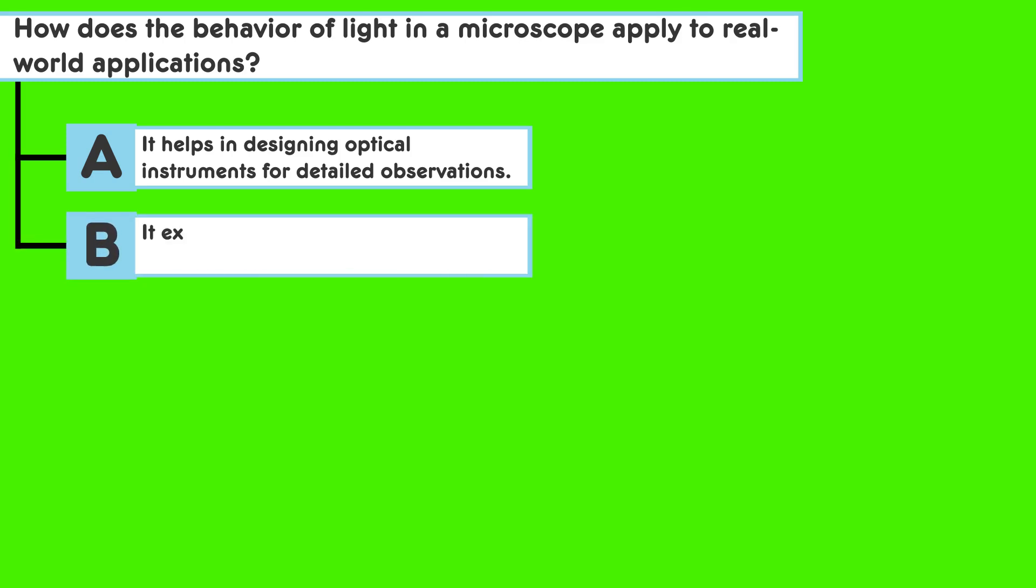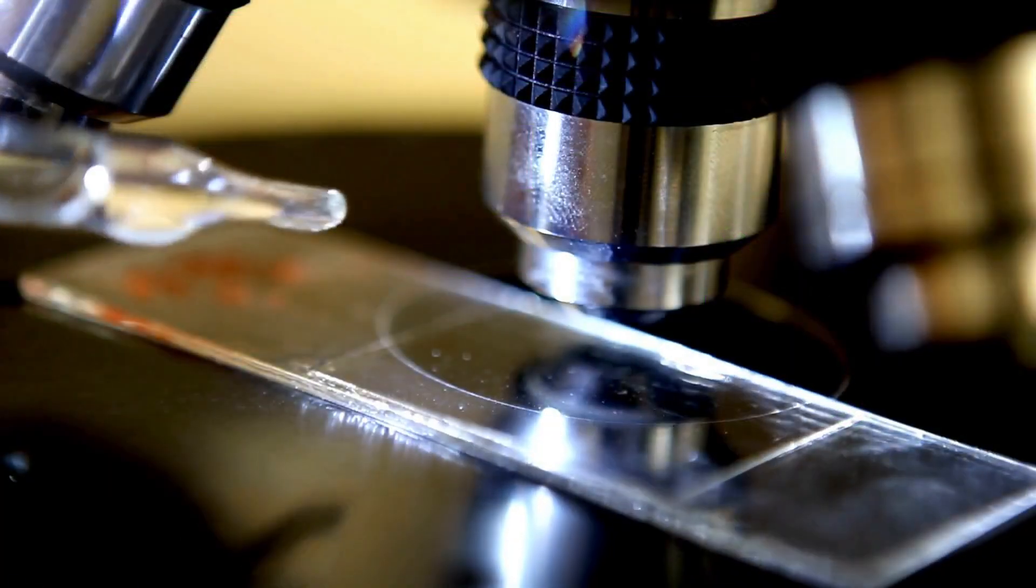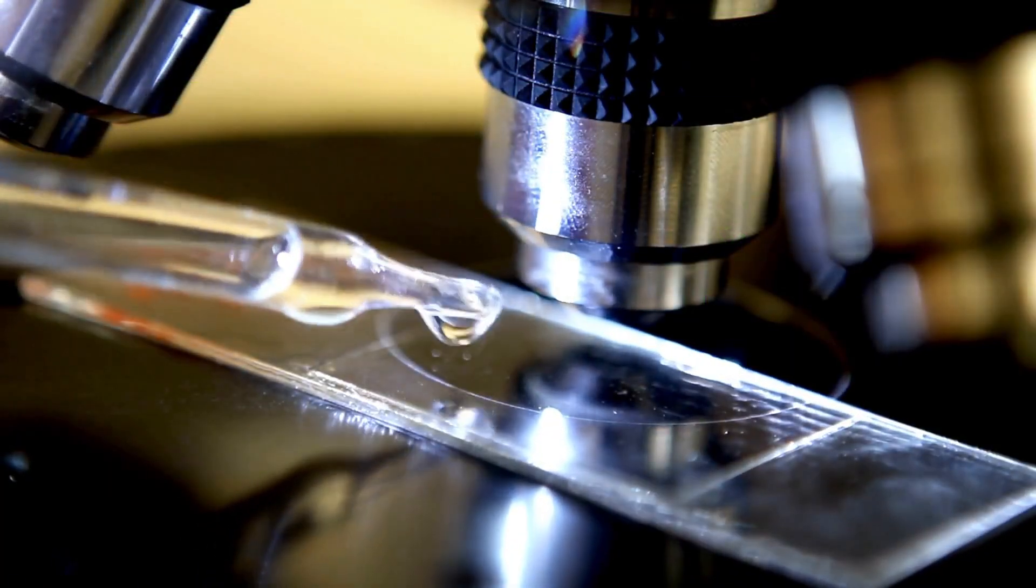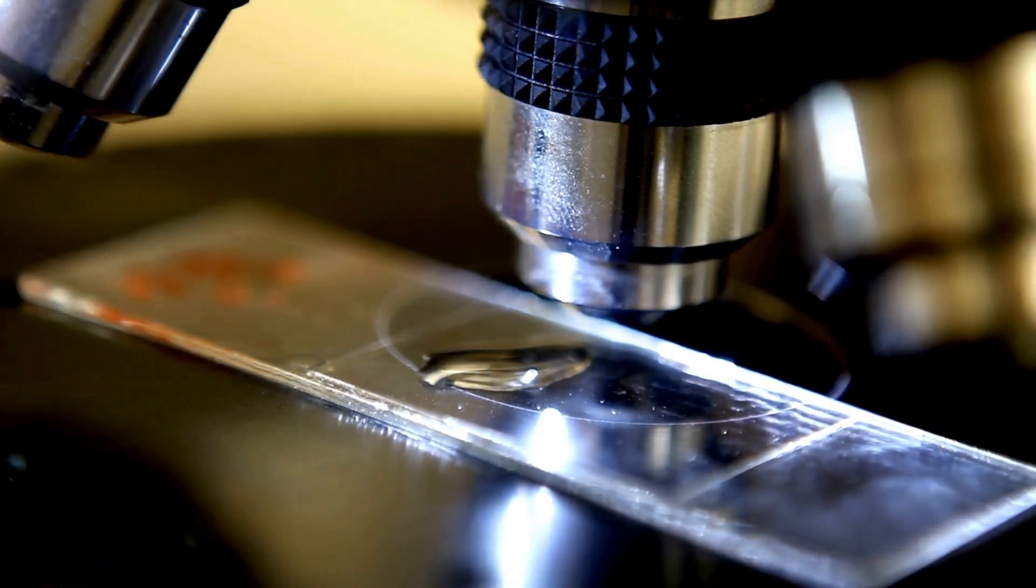Answer choice B: It explains why we can see tiny details of objects clearly. So let's think about this. Reflect on how lenses enhance our ability to see small details. How does light behavior contribute to this?